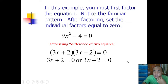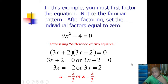Then let's solve: 3x=-2 or 3x=2. Divide both sides by 3, so x is either negative 2/3 or positive 2/3.